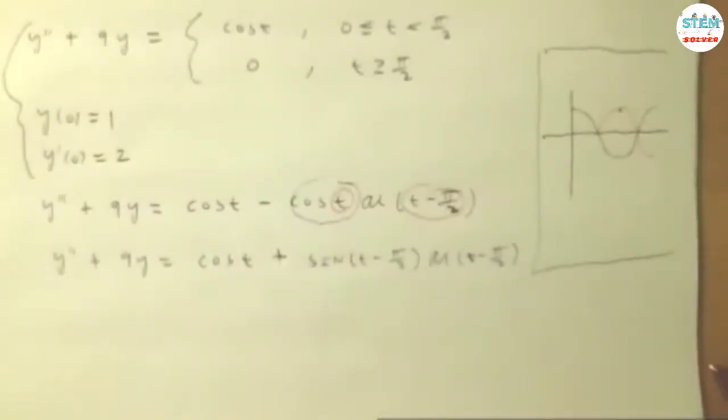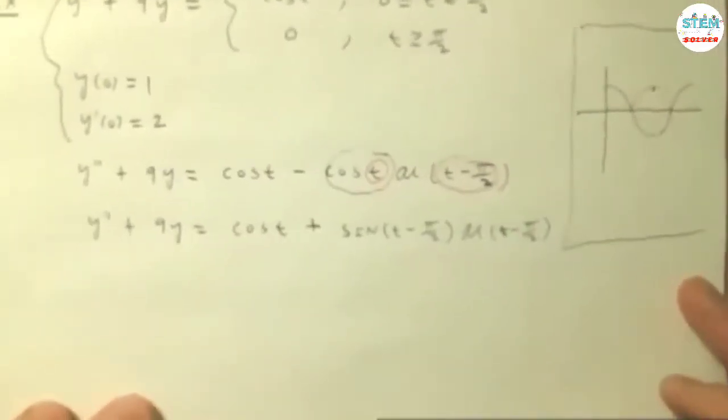So negative cosine is positive sine of t minus pi. We just learned that earlier by being careful and thinking about that. Now you have them to match up, so now you can take Laplace transforms.